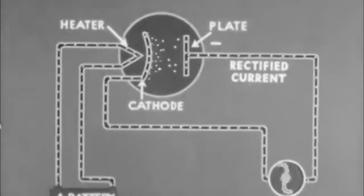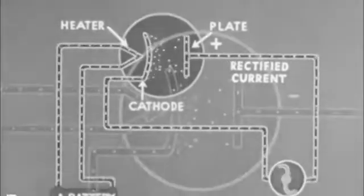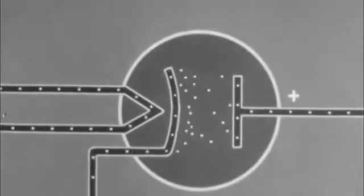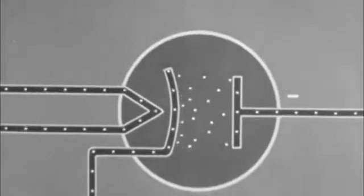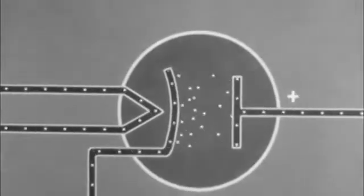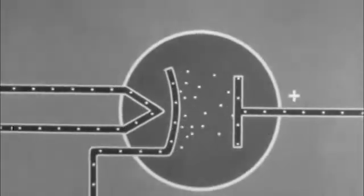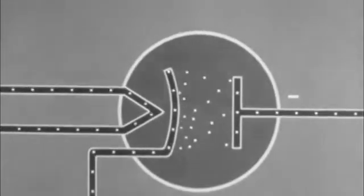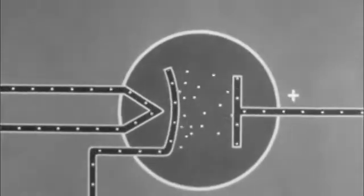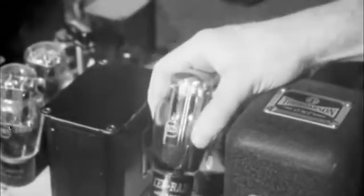In such a circuit, the current flowing from the plate is a pulsating current, flowing when the plate is positive, stopping when it is negative. Thus, the diode tube may be used to supply direct pulsating current.